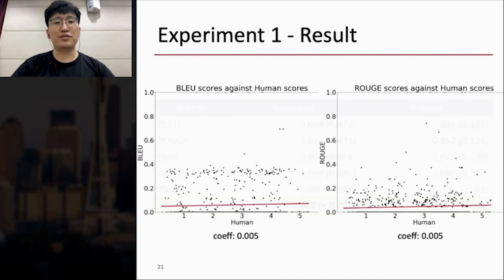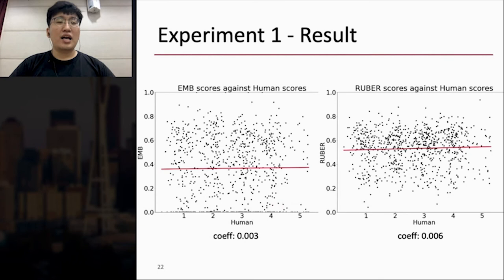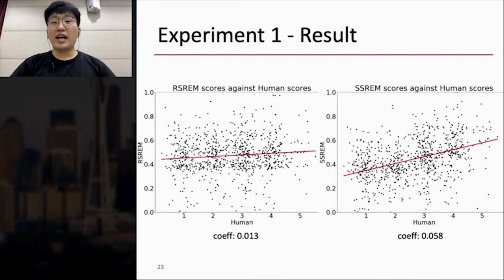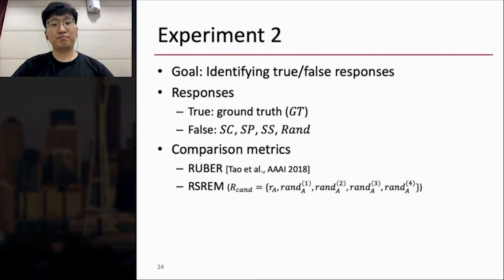I also draw scatter plots of human and model scores. X-axis is the human score, and Y-axis is the model score. A dot is one response, and a red line is a linear regression line. And I show the coefficient of the line. So in this slide, BLEU and ROUGE have many zero values, and the lines are flattened. And the line of embedding is also flattened. RUBER is better than embedding, but the line is still flattened. RSREM is better than RUBER, and the SSREM shows a higher positive correlation with human scores than other baselines.